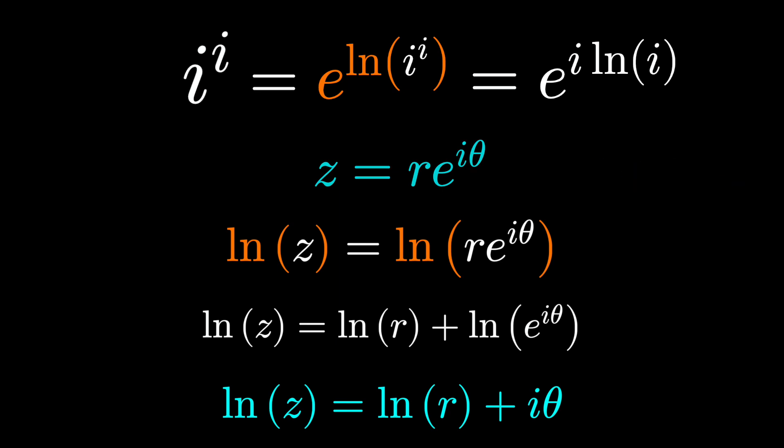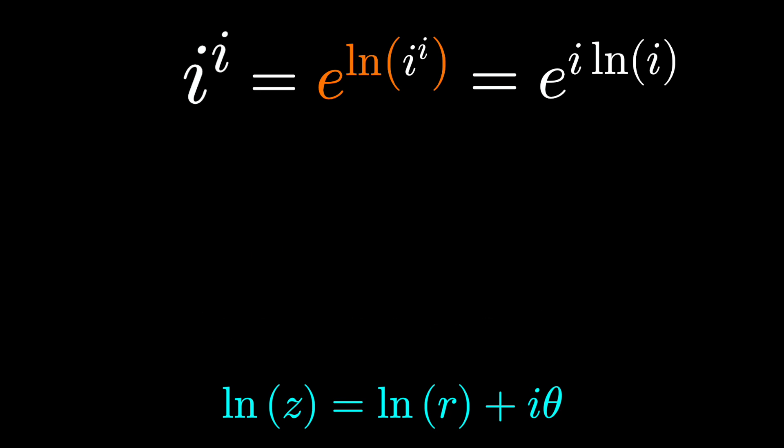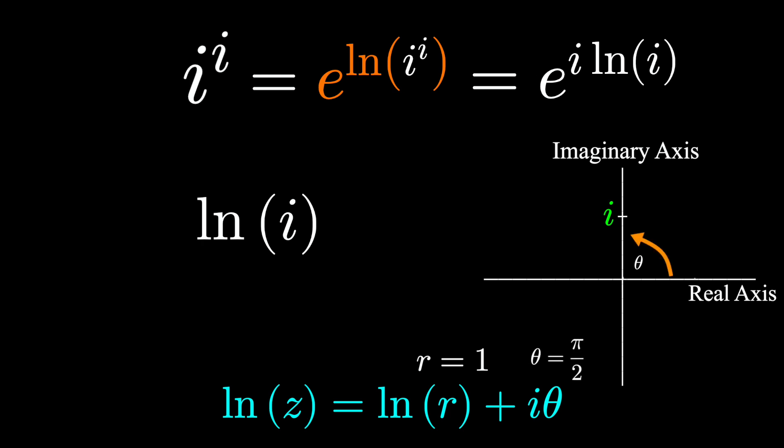It should be the natural logarithm of r, the distance from the origin, plus i theta, theta being that angle measured counterclockwise from the x axis. To compute natural log of i, how far is i from the origin? Well, it's a distance of 1 from the origin, so in this case r is 1. i lives along the positive vertical axis, and the angle theta is 90 degrees, or pi over 2 radians.